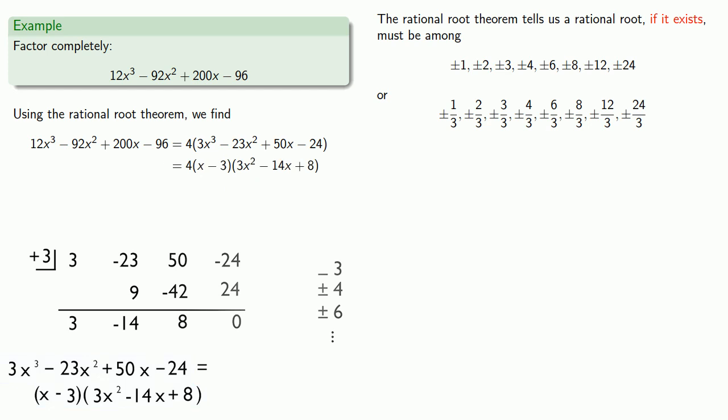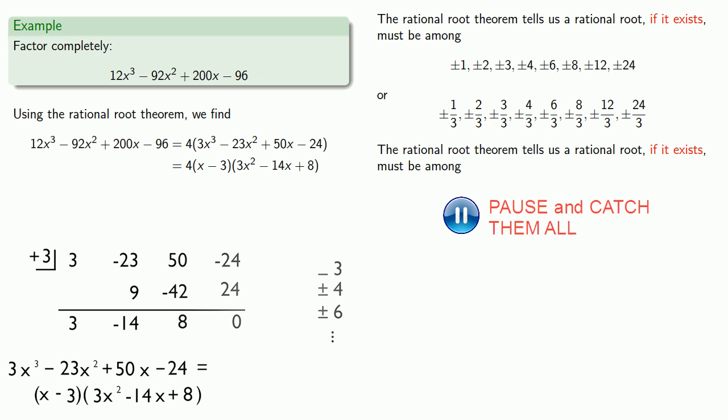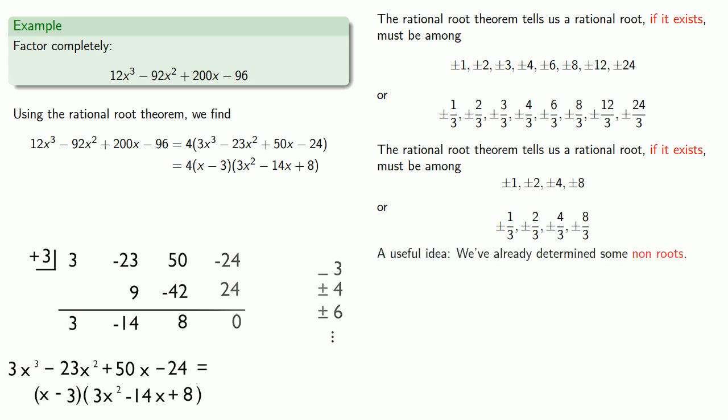And now we have a quadratic polynomial. We could factor this using the quadratic formula to find the roots, but just for practice, let's use our rational root theorem again. The rational root theorem tells us that a rational root, if it exists, must be among... And again, we have a very long list of possibilities. However, here's a useful idea. Remember, arithmetic is bookkeeping, and we've already determined that some of these are non-roots. We've already checked plus or minus 1 and plus or minus 2. So we don't need to check whether these are roots. We already know they aren't. So the first root we'll bother to check is 4.